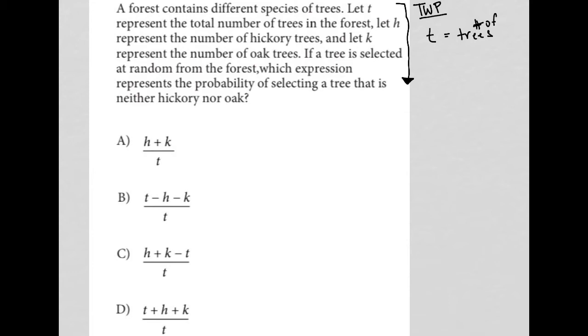Let H represent the number of hickory trees. Okay. So if T is all trees, so H is hickory trees. All right. Which obviously means H can never be larger than T. And let K represent the number of oak trees. So K equals oak.